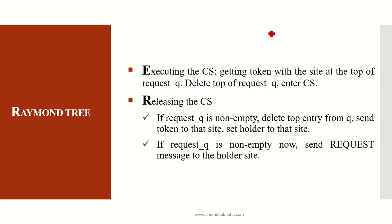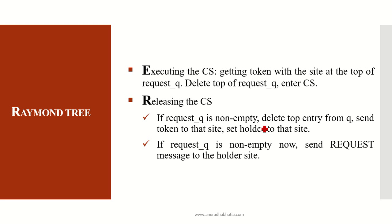When executing the CS: the token is given to the site at the top of the request queue. Once the token is obtained, the request is deleted from the first-in first-out queue and the site enters the critical state. Once it has entered the critical state, it must eventually release it so the token can be handed over to other sites requesting it. If the request queue is non-empty: delete the top entry from the queue, send the token to the site, and set holder to that site.